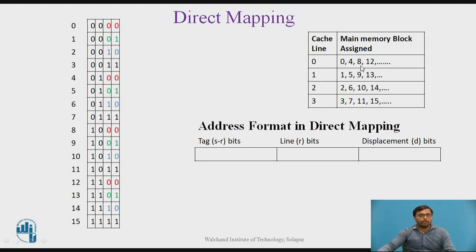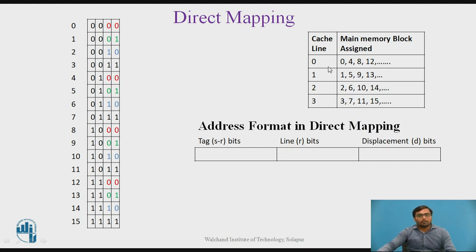Blocks 0, 4, 8, and 12 are mapped to the 0th line; blocks 1, 5, 9, and 13 are mapped to the first line, and so on. If block 0 is already in cache memory and the process needs to access block 8, 12, or 4, it will override the 0th line only — even if lines 1, 2, and 3 are free, because that particular block of main memory will be copied into that particular cache line only.